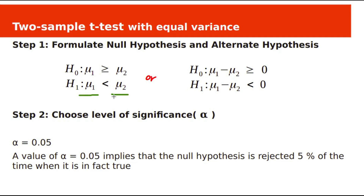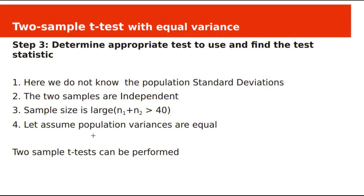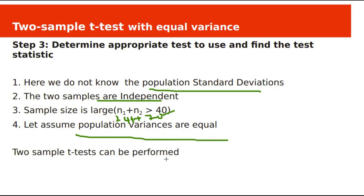The alternate hypothesis H1 is mu1 less than mu2 — we need to test this. The null hypothesis H0 is mu1 greater than or equal to mu2. Assume alpha equals 0.05, meaning 95% confidence level. We don't know population standard deviations sigma1 and sigma2. The two samples are independent with sample sizes 249 and 79, giving a total greater than 40. Assuming population variances are equal, we can perform the two sample t-test with equal variance.